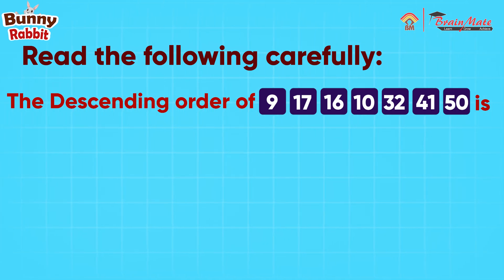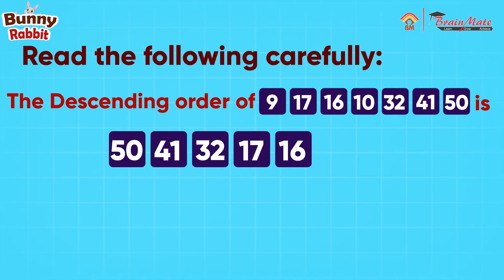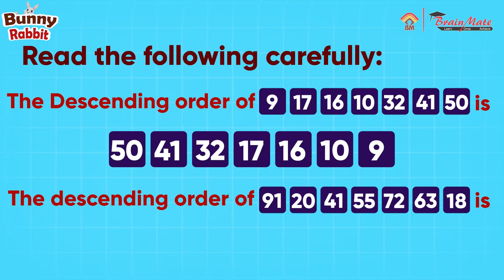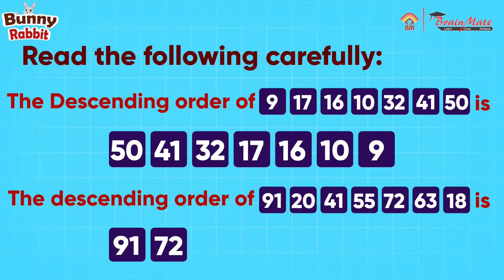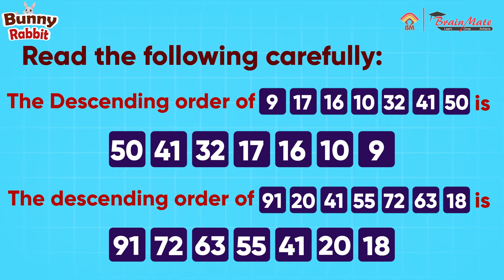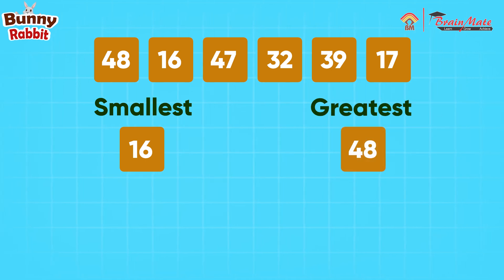...32, 41, 50 is 50, 41, 32, 17, 16, 10, 9. Second example: the descending order of 91, 20, 41, 55, 72, 63, 18 is 91, 72, 63, 55, 41, 20, 18.